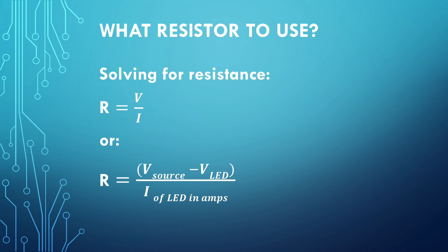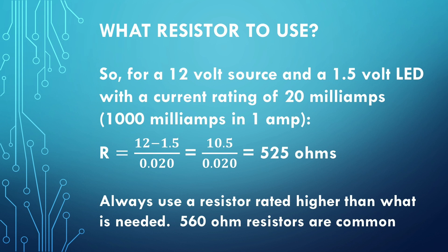For a typical 12-volt source with a 1.5-volt LED rated at 20 milliamps, you plug those values in. Keep in mind that Ohm's law requires amps, not milliamps, so divide by 1,000: 20 mA ÷ 1,000 = 0.02 A. The calculation is (12 − 1.5) ÷ 0.02 = 10.5 ÷ 0.02 = 525 ohms. You need a resistor rated for at least 525 ohms. You're probably not going to find a 525-ohm resistor, but 560-ohm resistors are available and work fine.